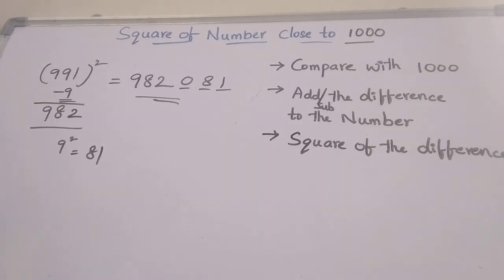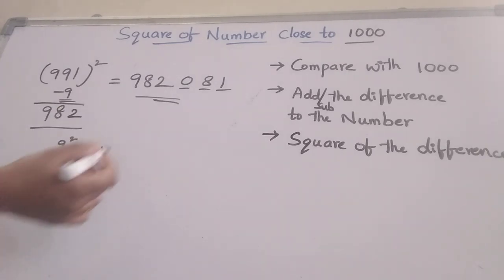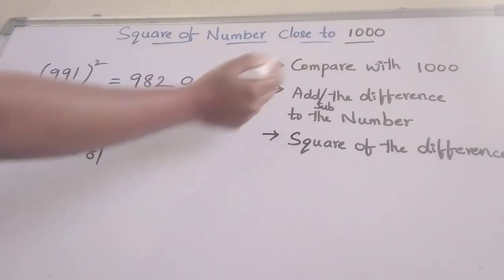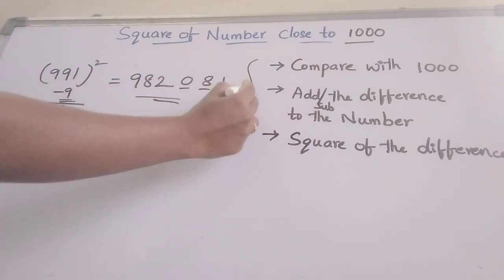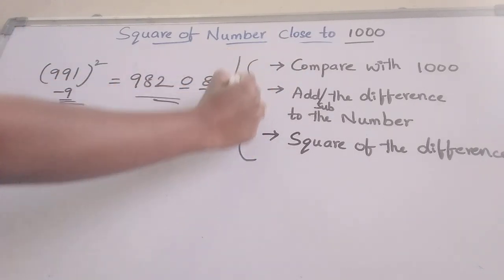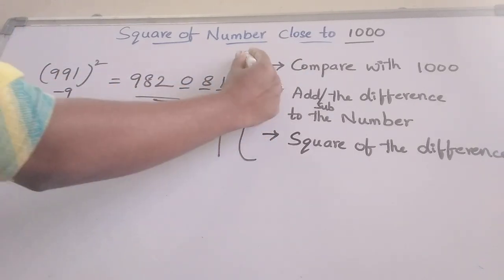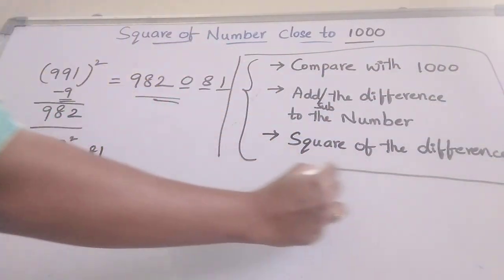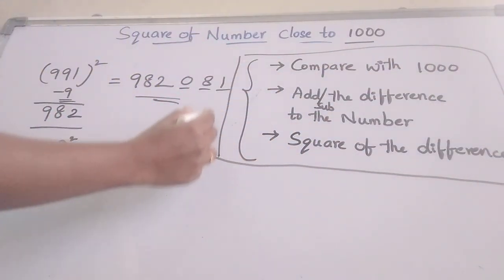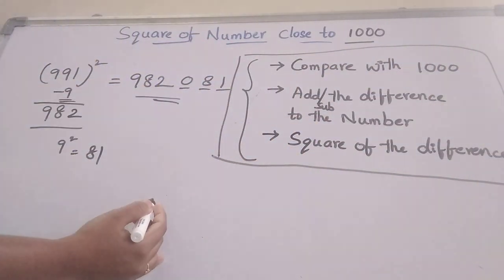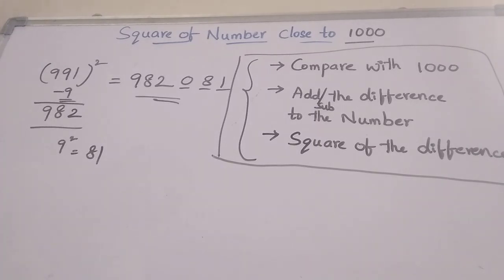This is a very simple technique to find the square of a number that is close to 1000. These are the 3 steps — you can note them down. Finding the square of numbers close to 1000 will be very easy. Thank you.